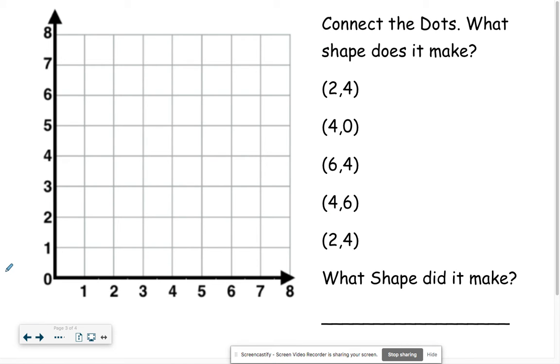So let's take a look at the activity today. Remember when we are graphing we always go over first and then we go up because we're working in the first quadrant. So the very first number said two, we're going over two and we're going up to four and we're gonna put a dot there.